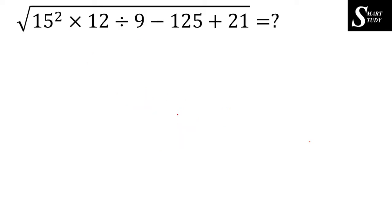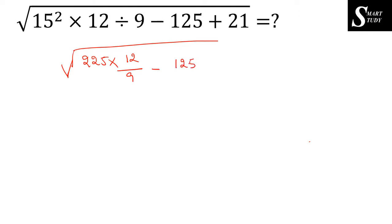Let us check out the fifth question: root of 15 squared into 12 divided by 9, minus 125 plus 21, is equal to question mark. Since 15 squared is 225, cancelling by 3: 225 divided by 9 gives 25, and 25 into 4 is 75. So 75 into 4 is 300. Then 300 minus 125 plus 21 gives 196, and root of 196 is 14.